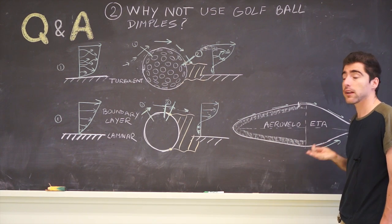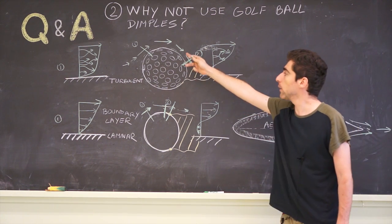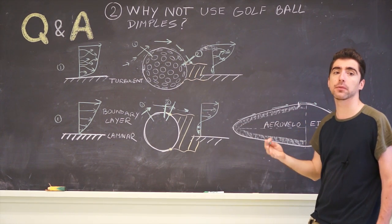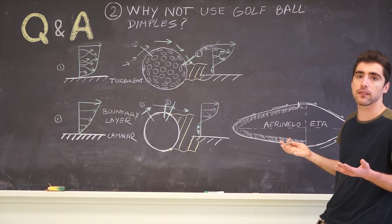So we have no separation. That means there is no reason to have a surface treatment like dimples that helps minimize the separation, because in our case it is already zero.